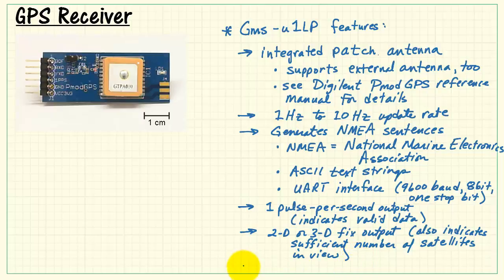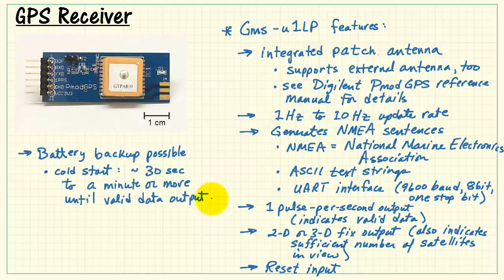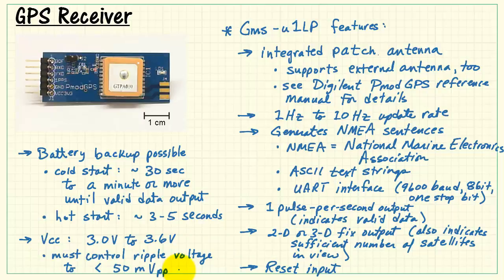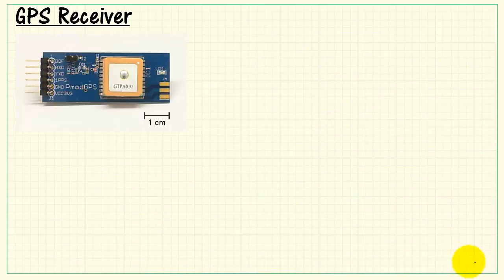There's also an output called the 1 pulse per second output. This indicates that you have valid data from the satellites. There's also another signal called the 2D or 3D fix output, and that also indicates whether or not you have a sufficient number of satellites in view for a good measurement. There's a reset input, and battery backup for this device is possible. The battery is helpful because for a cold start, it can take anywhere from 30 seconds to a minute or more until you start getting valid data out of it. For a hot start with battery backup, it's ready to go in about 3 to 5 seconds. The supply voltage is 3 volts to 3.6 volts. The manual does suggest that you want to control your ripple voltage to better than 50 millivolts peak to peak.